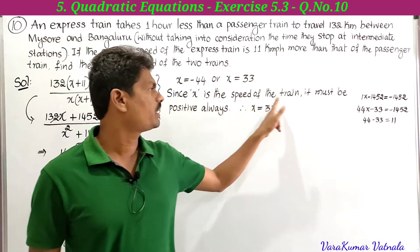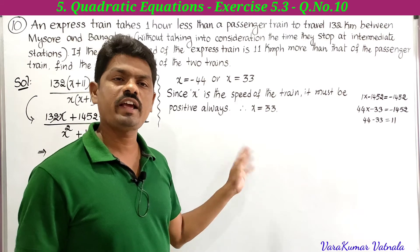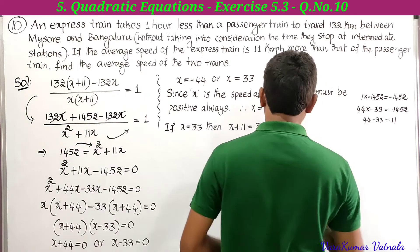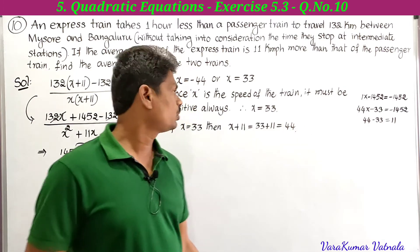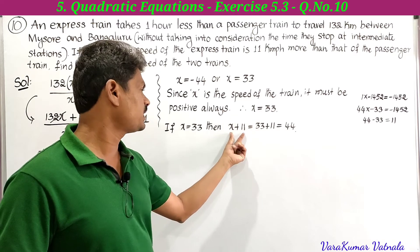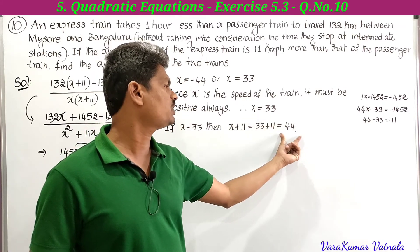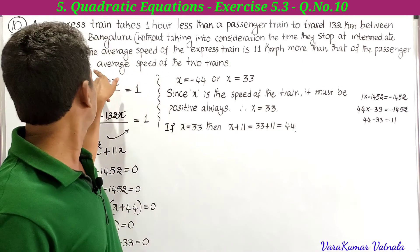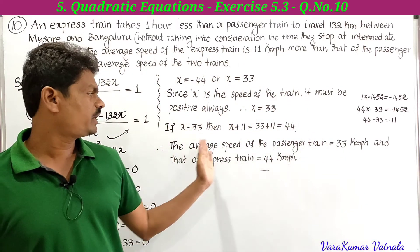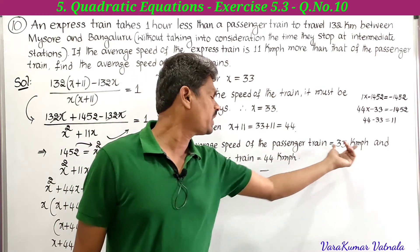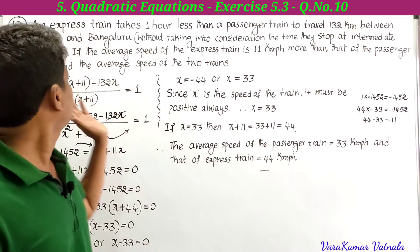Since x is the speed of the train it must be positive, therefore x equals 33. If x equals 33, then x plus 11 equals 44. Here x is the speed of the passenger train and x plus 11 is the speed of the express train. Therefore the average speed of the passenger train is 33 kmph and the average speed of the express train is 44 kmph.